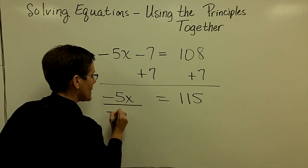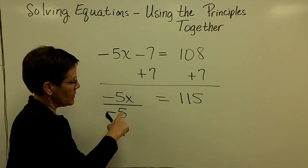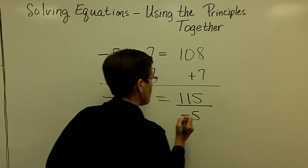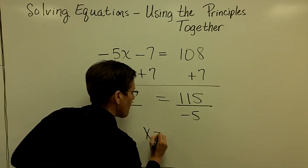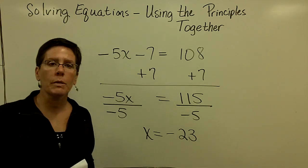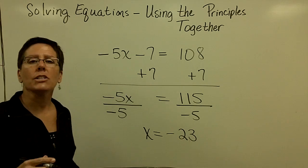Now I'm going to divide both sides by a negative 5 to get x alone. So I've got to divide this by a negative 5, and I will have x is equal to, it looks like a negative 23 would be my solution. I think I'll go ahead and check this one.